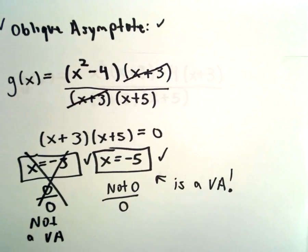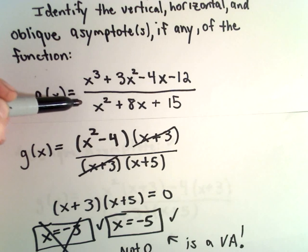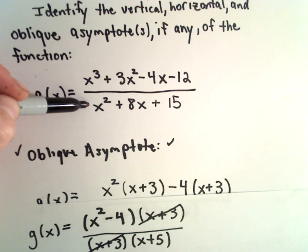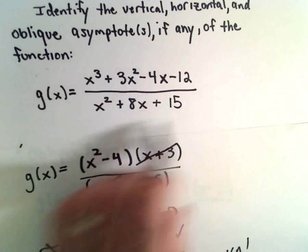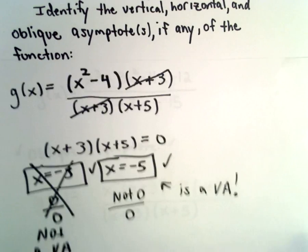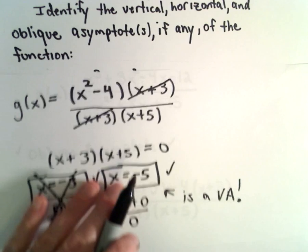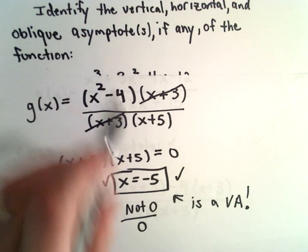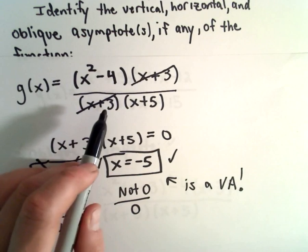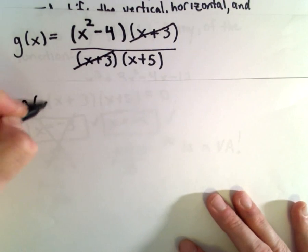Now, to find the oblique asymptote, we said this happens since the degree of the numerator is one larger than the degree of the denominator. So we have to do long division. You could do long division on the original expression, but it's much easier to do long division on this simplified expression. That's actually one of the reasons why I found the vertical asymptote first.